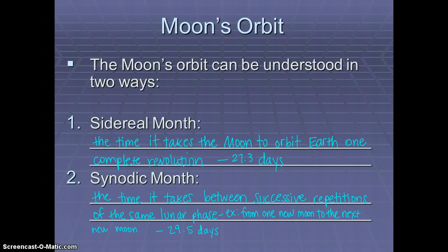The Moon's orbit can be understood in two ways. First, there is what we call the sidereal month. This is the time it takes for the Moon to orbit Earth one complete revolution, which is 27.3 days—the number we've mentioned before.